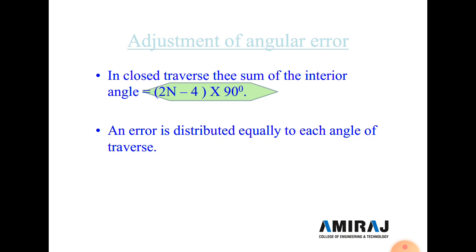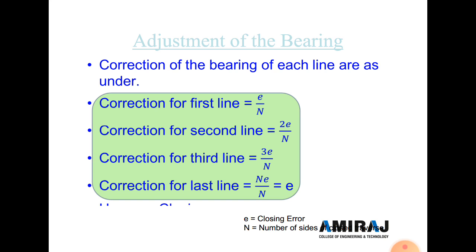Now, adjustment of bearing. The correction of bearing for each line is applied as follows: correction for the first line = E/n; correction for the second line = 2E/n; correction for the third line = 3E/n; and correction for the last line = nE/n. Here E = √(ΣL² + ΣD²) and n is the number of lines.